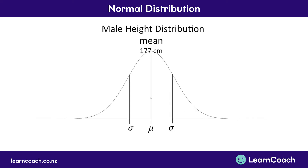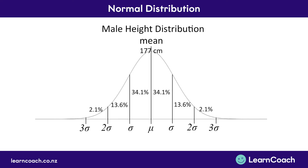By definition, one standard deviation means 34.1% away from the middle. The middle is the 50% point — 50% on the left and 50% on the right. So if we go up to 84.1%, that is one standard deviation away. Two standard deviations would cover the 34.1% away from the middle plus another 13.6% away from the middle. Another 2.1% of the population lives between two and three standard deviations away, and 0.1% exists beyond three standard deviations away from the mean.